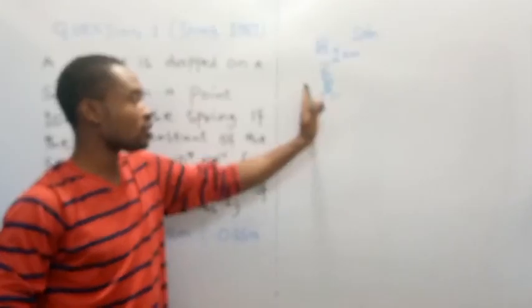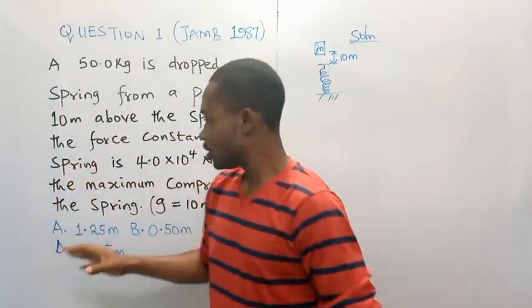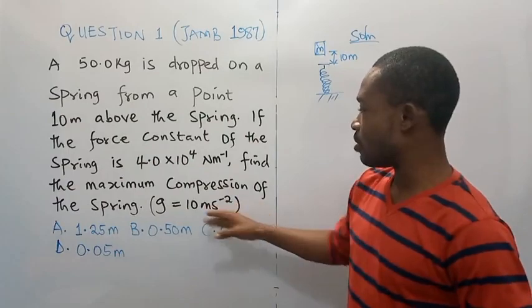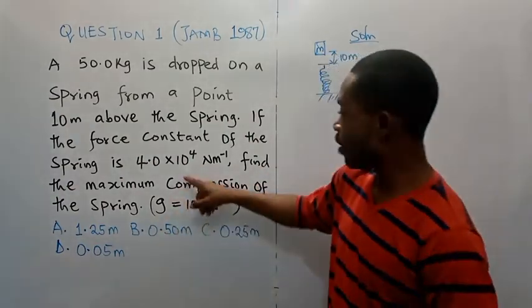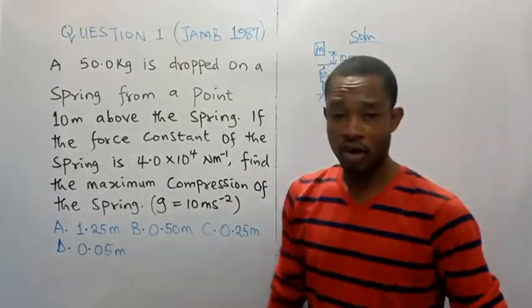When this mass falls on this spring, it's going to compress the spring. That's just the idea here. And then, the examiner asked us to find the maximum compression of the spring, given that the force constant is 4.0 times 10 to the power of 4 Newton meter.